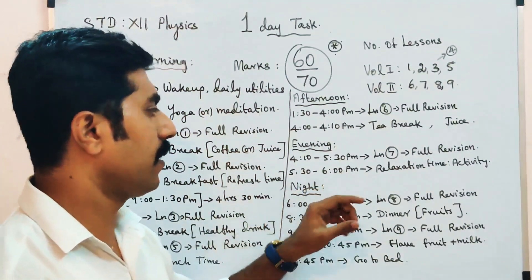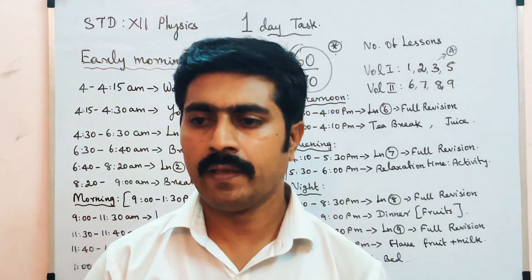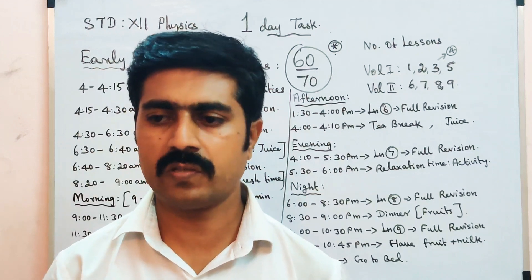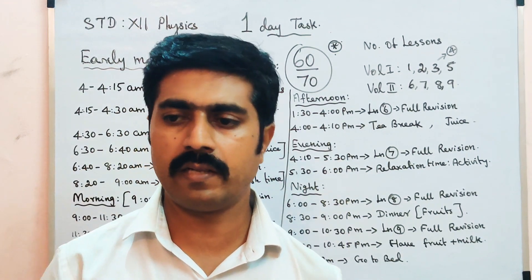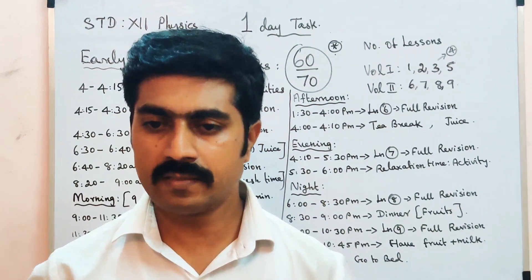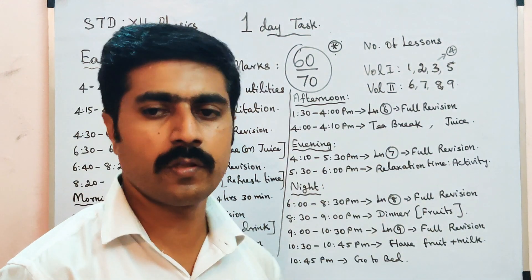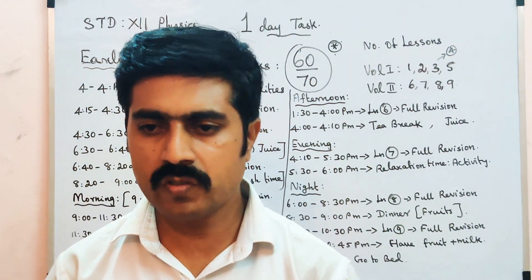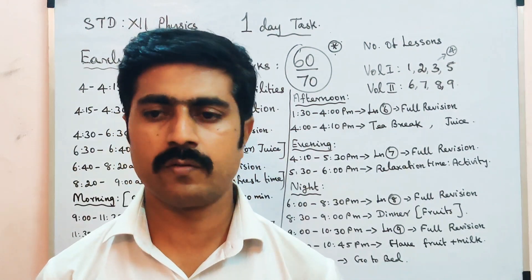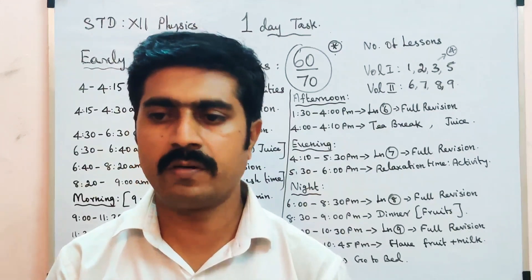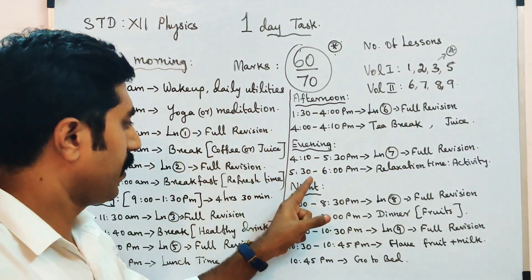5:30 to 6:00 PM — half hour relaxation. Colorful mind games, like chess or indoor games. But avoid activities that drain too much energy. You should not get too tired, as you still have tasks ahead.